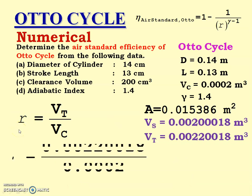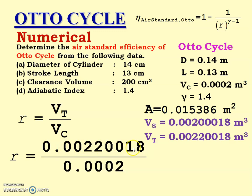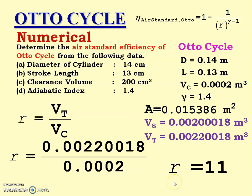Now we calculate R: R = Vt / Vc. Vt we have just calculated and Vc is given in the numerical. Therefore R = 11.